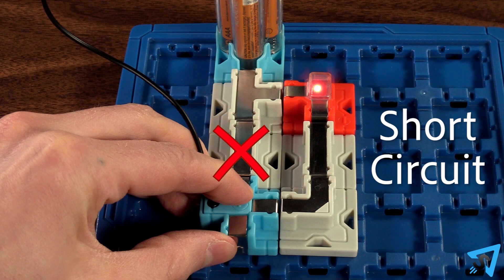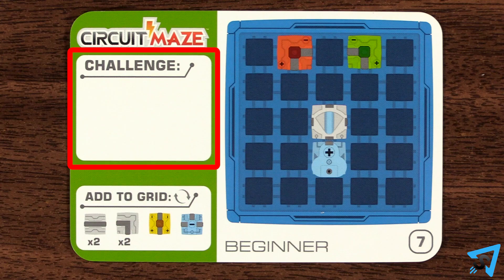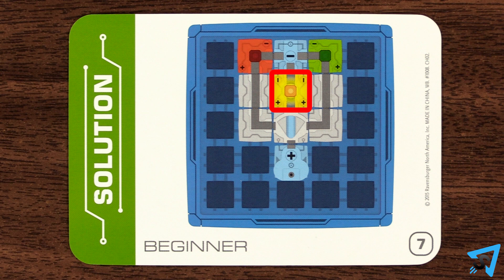Short circuits in this game have a safety feature that results in the battery being slowly drained. However, in the real world, short circuits can be very dangerous. A blank challenge means you need to connect the circuit lighting up any lights without creating a short circuit.